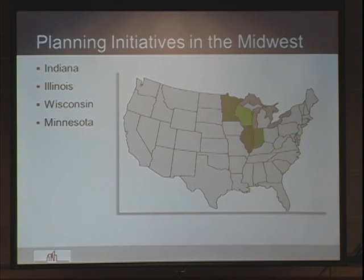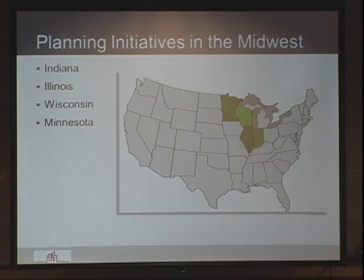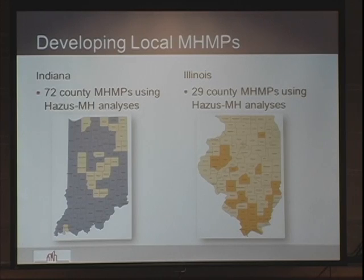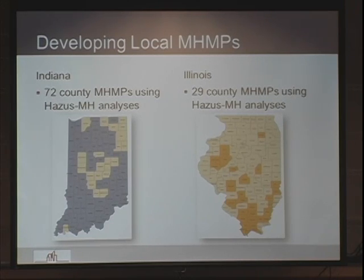At the Polis Center, we're an applied research center, and we have started to focus on multi-hazard mitigation planning since about 2002. We've done some planning efforts in Wisconsin and Minnesota at a statewide scale, but we've really focused on Indiana and Illinois lately. We've done 72 of the 92 counties in Indiana, and approximately 30 so far in Illinois, and we're continuing to get grants to complete more projects.